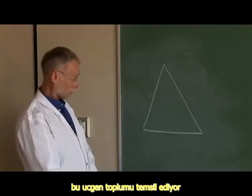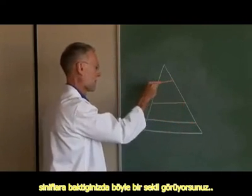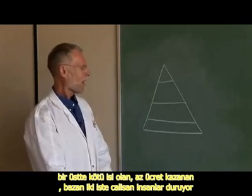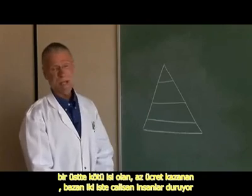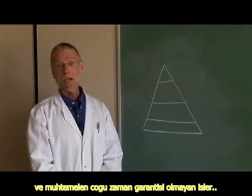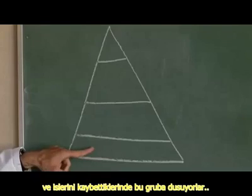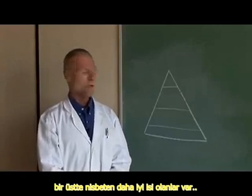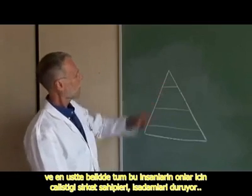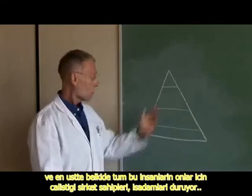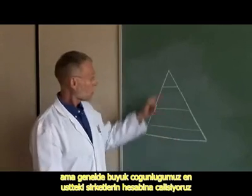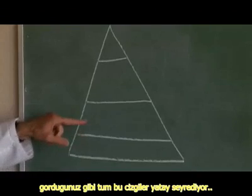This triangle represents society. When we look at class, it looks something like this. Down here are the people who can't work or can't find jobs — they tend to be pretty poor. Here are the people with lousy jobs: low paying, probably boring, may have to work more than one job, probably no benefits or job security. Above are the people with decent jobs — benefits, security, pensions, better paid. And at the very top, the people who own and run the corporations that most people work for. There are a few people — small farmers, small business people — who work for themselves, but generally most of us work for the larger corporations. As you can see, all of these lines are horizontal.